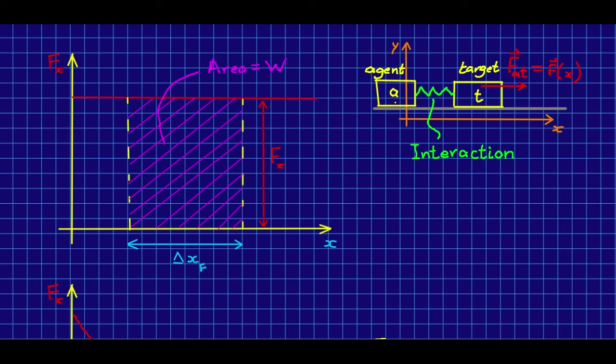Let's think about two objects, an agent and a target, and there's some interaction between them. It doesn't matter what kind of interaction this is. Perhaps these are two carts with some magnetic interaction, or maybe they're two objects connected by a spring, but there's some interaction which results in the agent exerting a force on the target. The important thing for our purposes is that that force has to be a function of the position of the target.